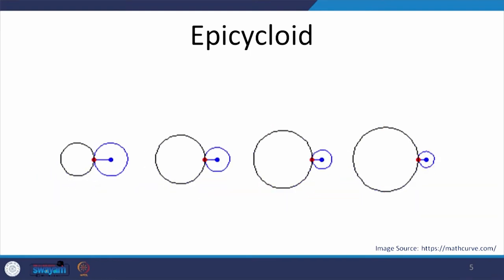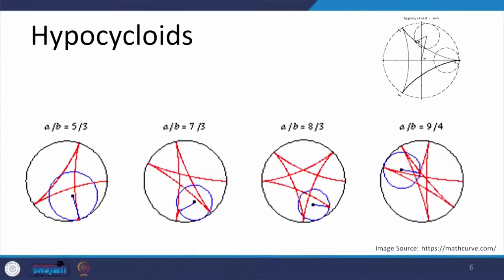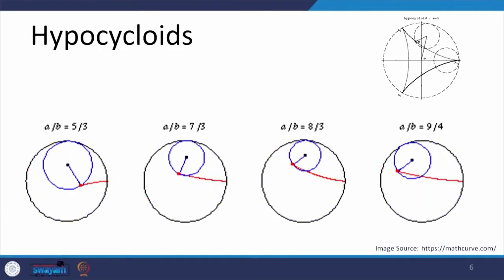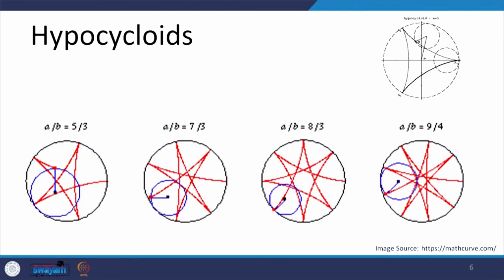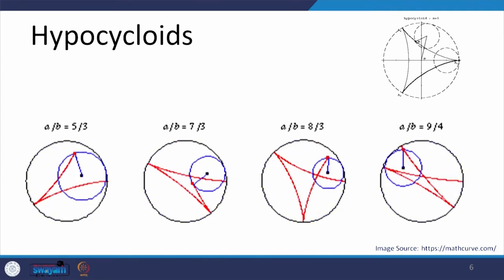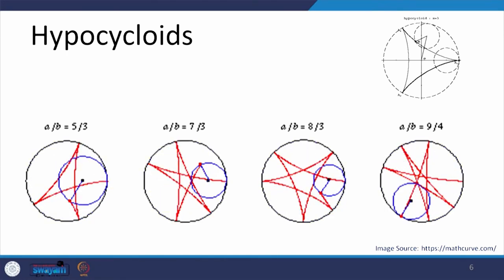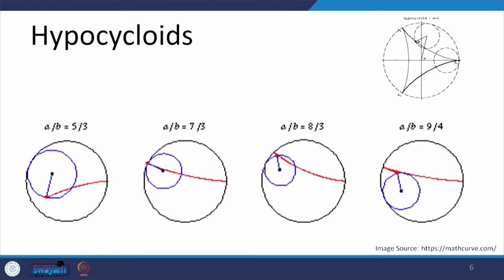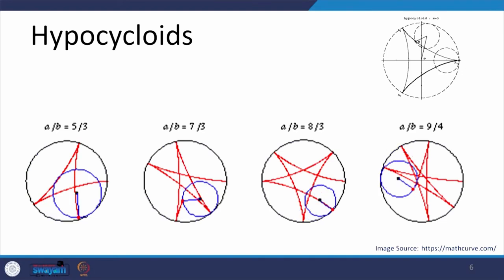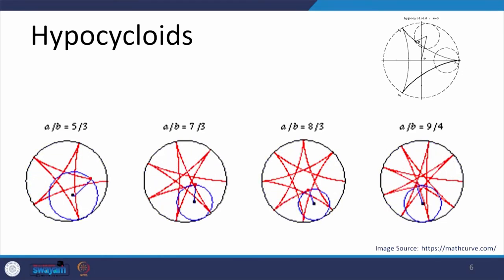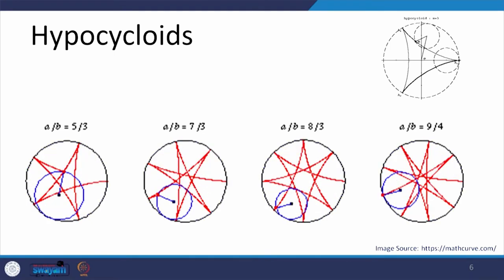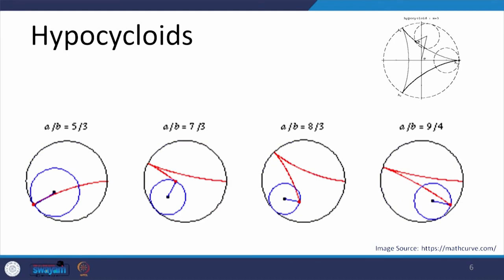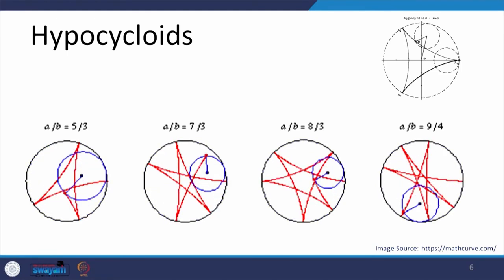This is epicycloid. Now we will look at hypocycloid. In this case the circle which is moving is moving inside a limiting circle. Again depending upon the proportion between this fixed circle which is the path and the moving circle which is inside, we get these different patterns which is what hypocycloid is. Again there are numerical formulae which we can use to trace these paths. We only have to know how to draw it geometrically, that is what we are going to be learning here. This is hypocycloid.